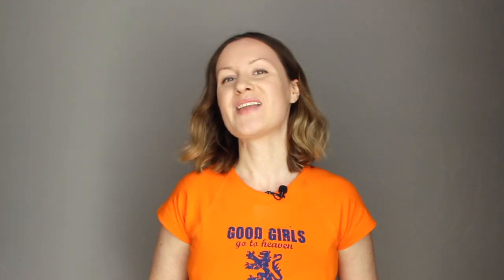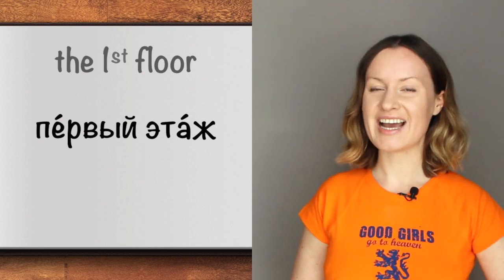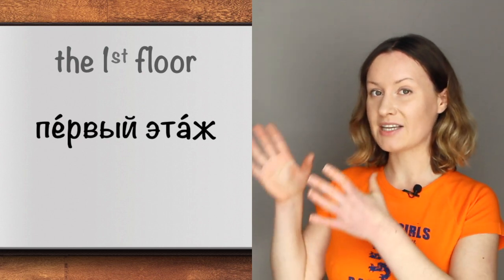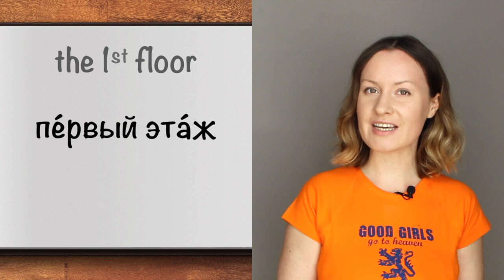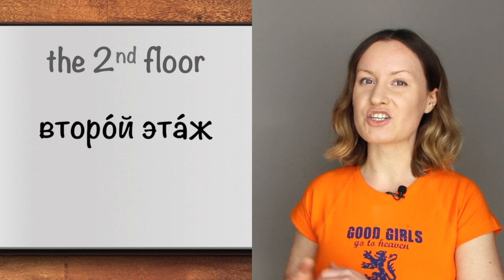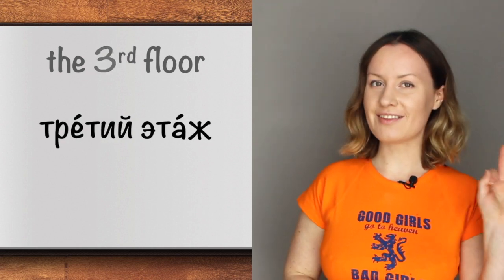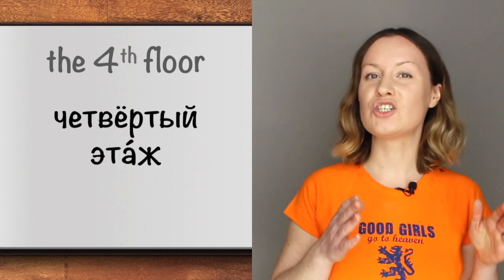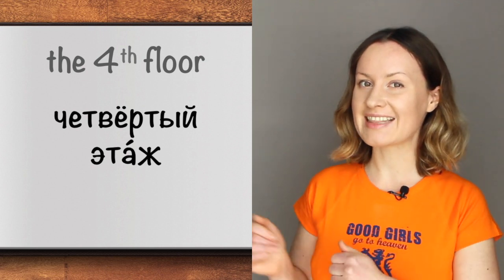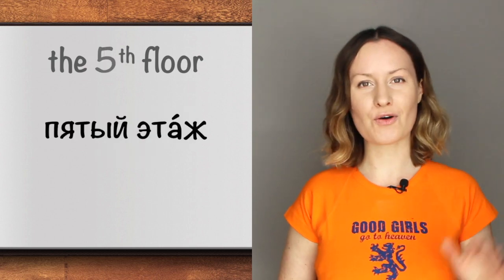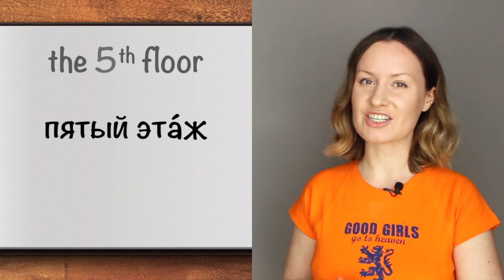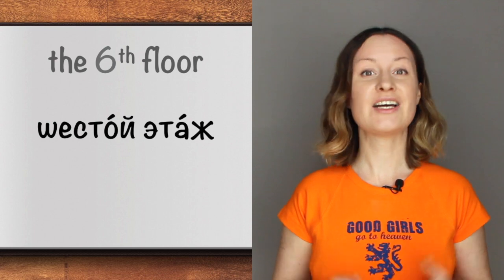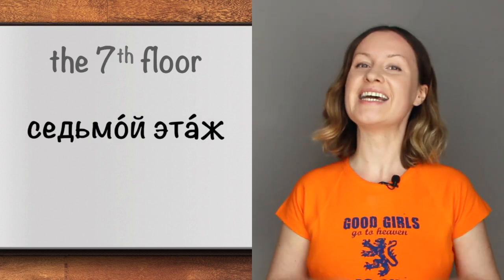Let's stick to seven numbers only. The first floor in Russian is первый этаж. Первый is an adjective in masculine because the word этаж is masculine — it has no vowel ending. The second floor is второй этаж. The third floor is третий этаж. The fourth floor is четвёртый этаж. The sixth floor is шестой этаж. And the seventh floor is седьмой этаж.